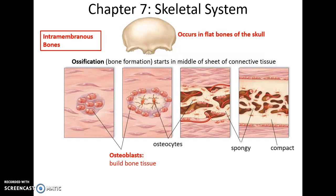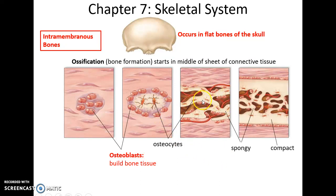Intramembranous bones are the flat bones found in the skull, and they form through the intramembranous process. They start off as a sheet of embryonic connective tissue, and then at different locations inside the sheet, cells start to become osteoblasts. The osteoblasts deposit the bony matrix, which becomes calcified through ossification. Osteocytes form trapped within the tissue, and over time the tissue spreads throughout the embryonic connective tissue, forming what looks like spongy bone tissue, with blood vessels incorporated. Eventually bone remodeling gives us compact bone on the outside with spongy bone inside.